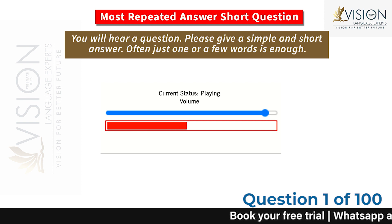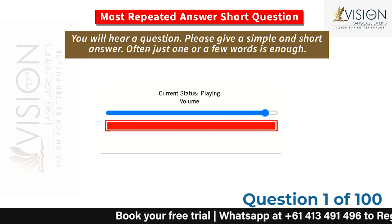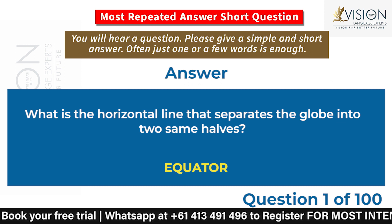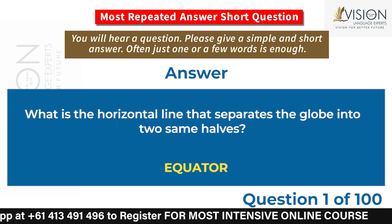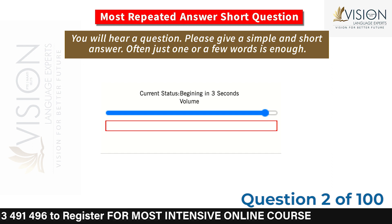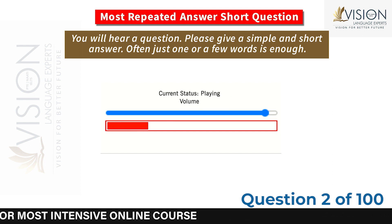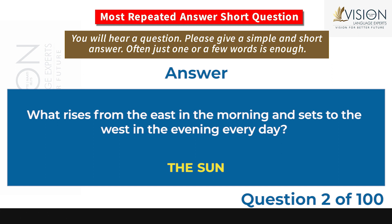What is the horizontal line that separates the globe into two same halves? The equator. What rises from the east in the morning and sets to the west in the evening every day? The Sun.